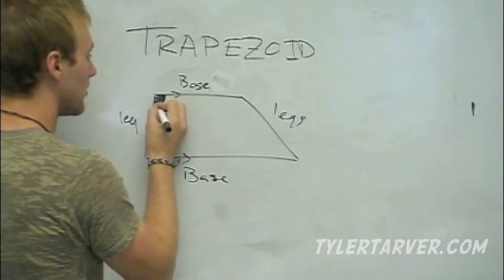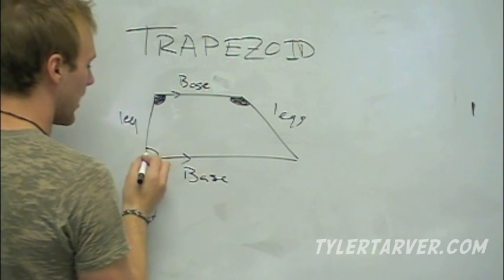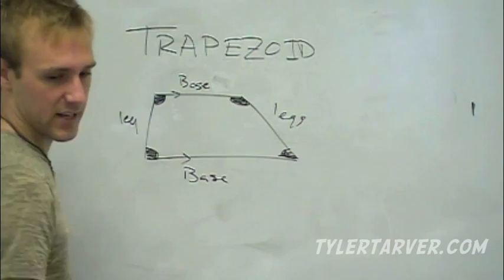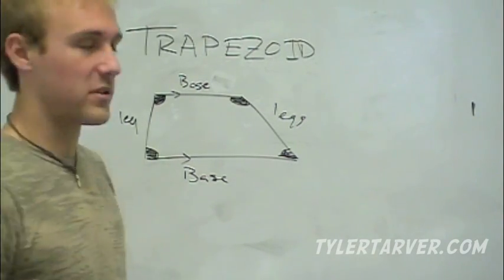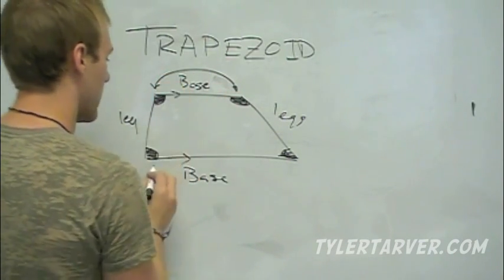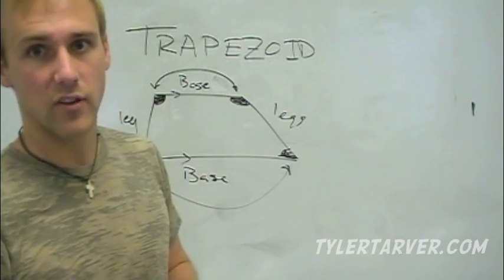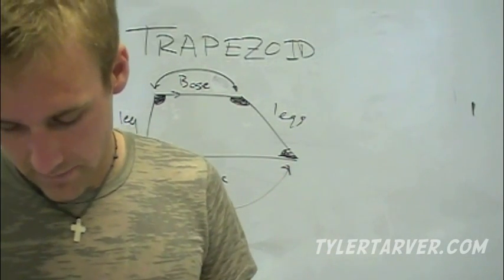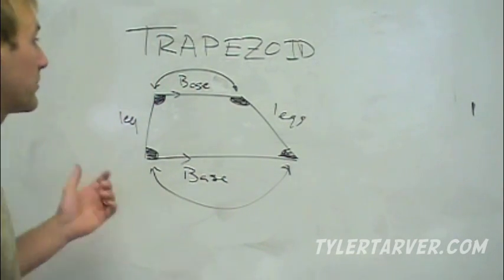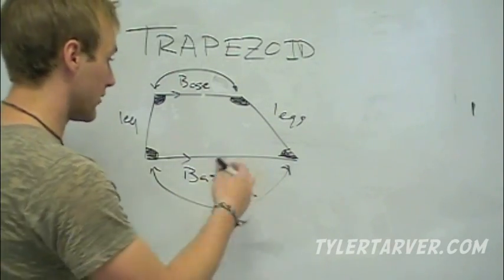These angles — that angle and this angle — are called base angles. And this angle and this angle match up as base angles. They match up because they are connected to the same base. Really the only thing about a trapezoid is that there's one pair of parallel sides — the rest is just a quadrilateral, and those are just terms.